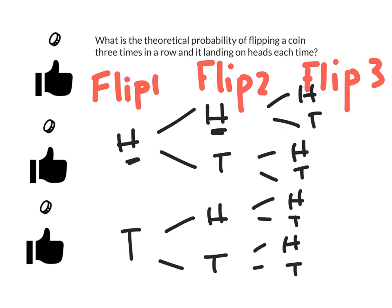So now once I have my tree diagram made, I need to see where my desired outcome is. In this case it's three heads in a row. Well if I look here I could see I flipped heads once here, here again, and then here again.